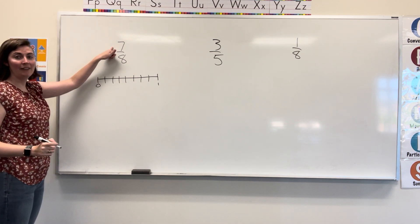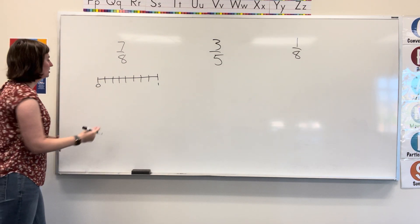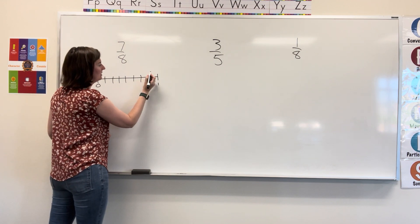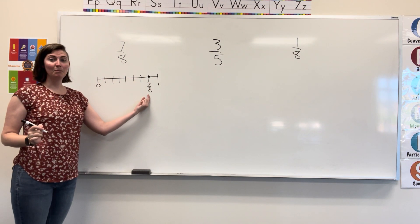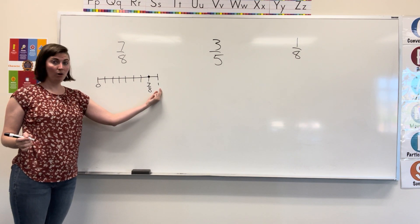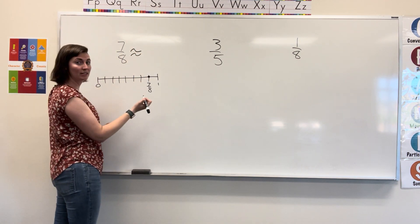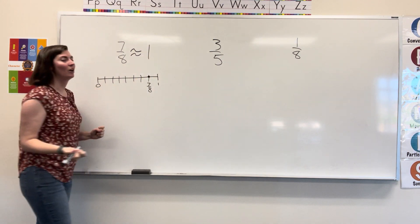Now, I'm going to try and find the seventh part. So, I count one, two, three, four, five, six, seven. Seven eighths is much closer to the benchmark of one whole. So, seven eighths is approximately one whole.